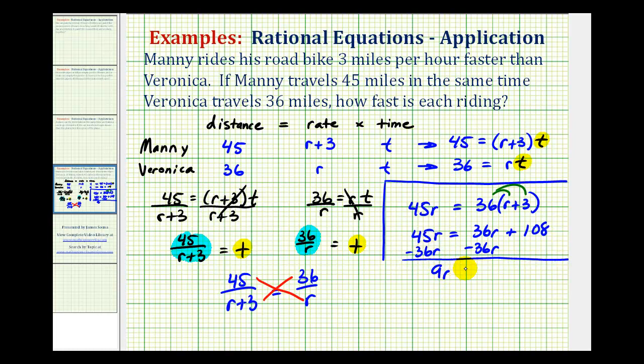So we'll have 9r equals 108, divide both sides by nine. And we have r equals 12, this is in miles per hour.